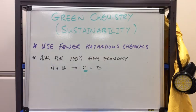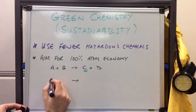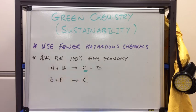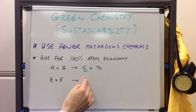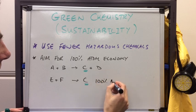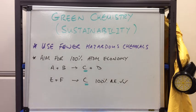If you can develop another process to make C — for example, E + F → C — you can see that the only product is C, the one that you want. All of the atoms in the reactants make the product, so there's no waste at all. This process would have 100% atom economy, which is obviously preferred.